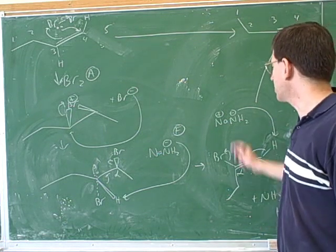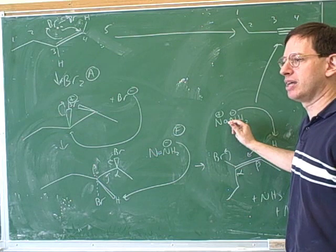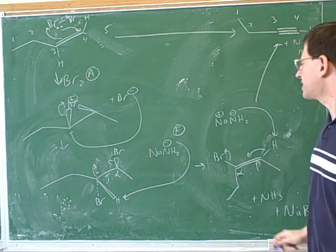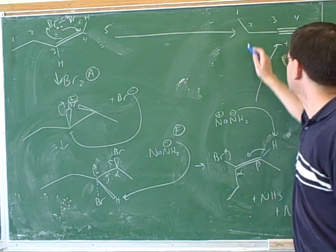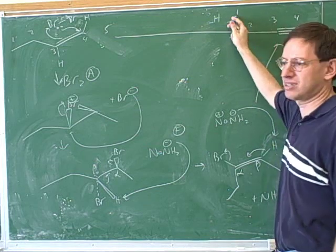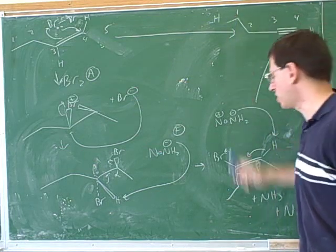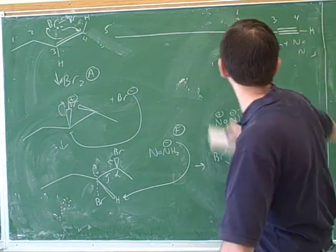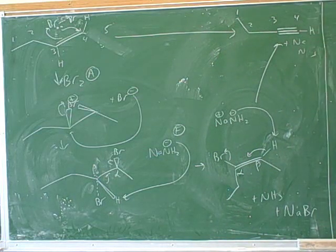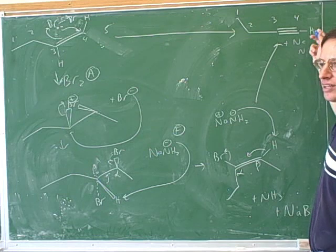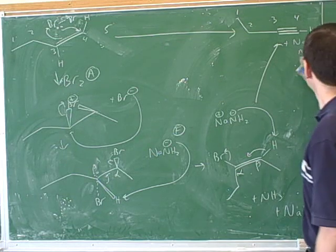Remember that we're using a very strong base here, sodium amide. Now, this still can't take any old hydrogen. For example, it can't take this hydrogen because that would not form a stabilized negative charge. But if you remember from the alkyne chapter, alkynes are slightly acidic, terminal alkynes, because those are the only ones that have hydrogens.